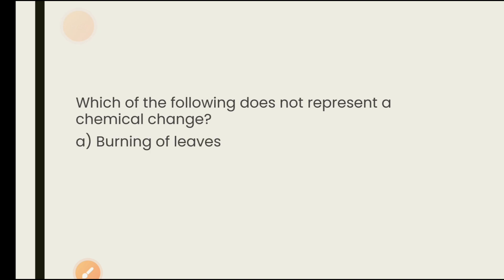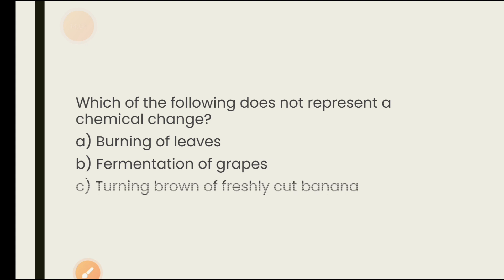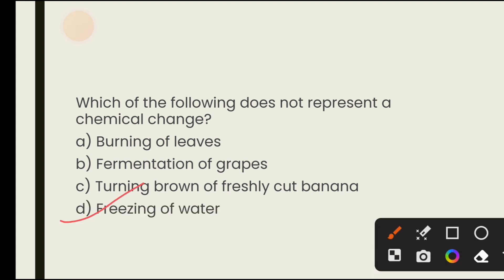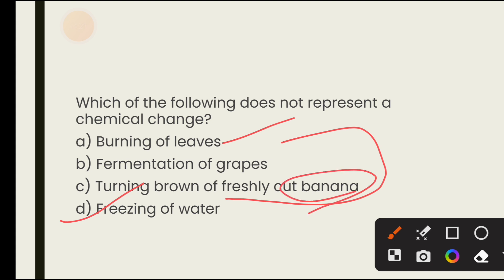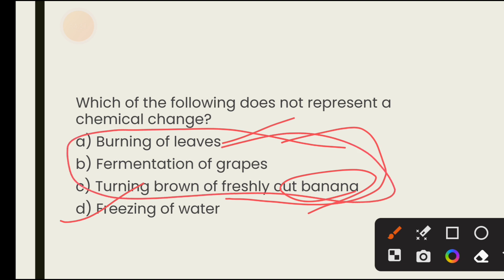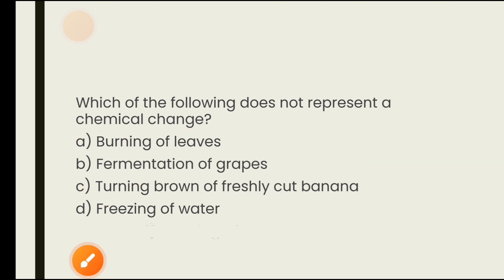Which of the following does not represent a chemical change? Options are burning of leaves, fermentation of grapes, turning brown of freshly cut banana, and freezing of water. The first three are chemical changes. Freezing of water is a physical change, so the answer is freezing of water.